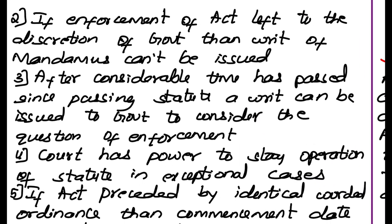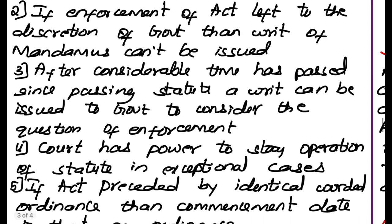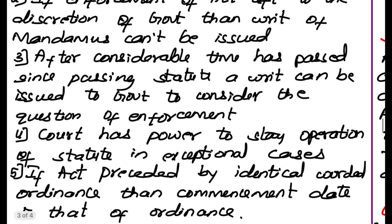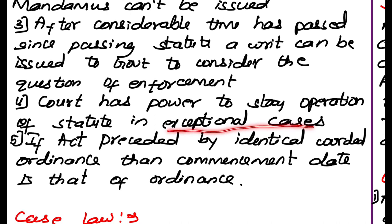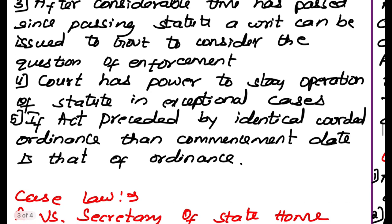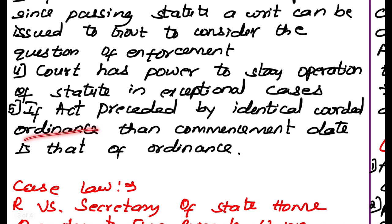If enforcement of an act is left to the discretion of the government, then a writ of mandamus cannot be issued. However, after considerable time has passed since commencing a statute, a court can pass a writ to the government to consider whether it has done the right job in commencing that act. Courts also have the power to stay the operation of a statute in exceptional cases only. If an act is preceded by an identically worded ordinance, then the commencement date is that of the ordinance.